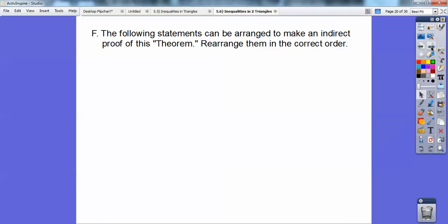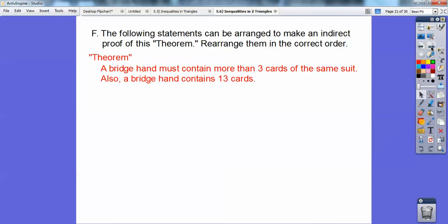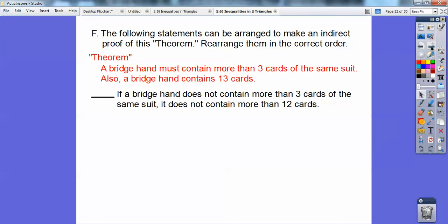The following statements can be arranged to make an indirect proof of this theorem. Rearrange them in correct order. Here's your theorem. A bridge hand must contain more than three cards of the same suit. Also, a bridge hand contains 13 cards. Now that's given right there. That's my theorem.